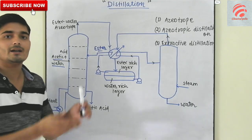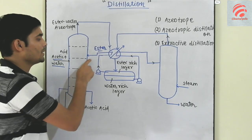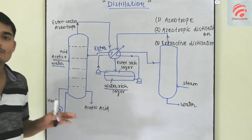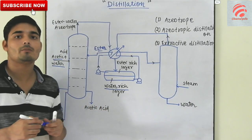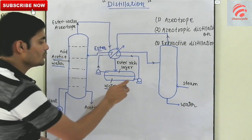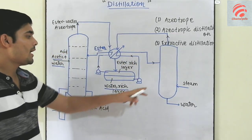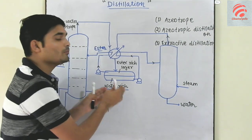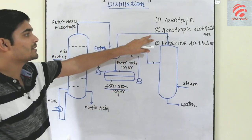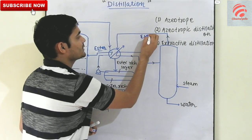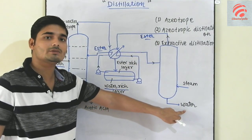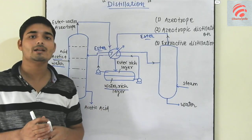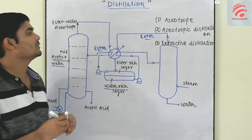This is a continuous process. Now we have a water-rich layer — water is present. Water and ester undergo distillation. The total azeotropic mixture of water can simply be separated this way — we have an azeotropic distillation process.